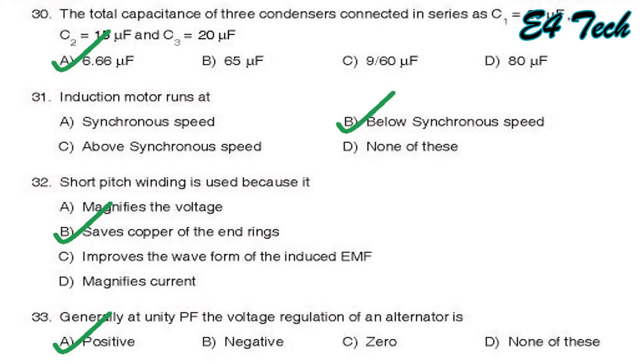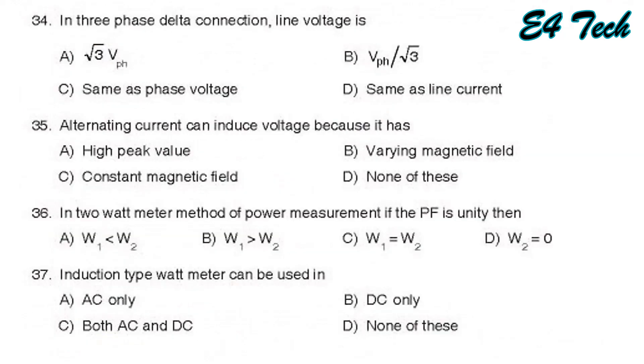In three-phase delta connection, the line voltage VL is equal to V phase and IL is equal to root 3 times I phase. That is line voltage is same as phase voltage, option C.